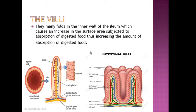This increases the amount of absorption of digested food. It is covered by an epithelial lining with one cell thickness. Here you can see this yellow part — it is the lymphatic system where the absorption of fatty acids takes place. And we have the blood capillaries, or the blood system, where glucose and amino acids are absorbed.